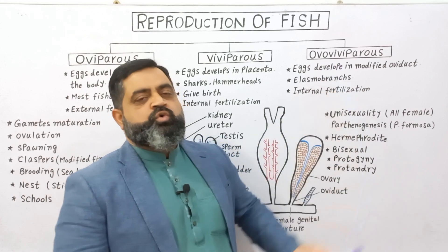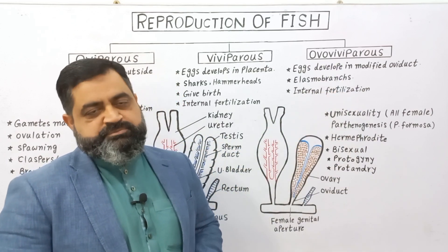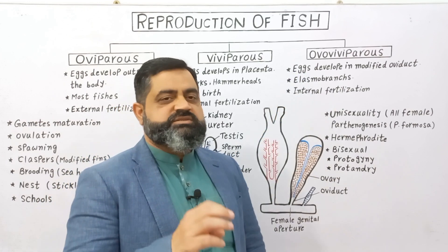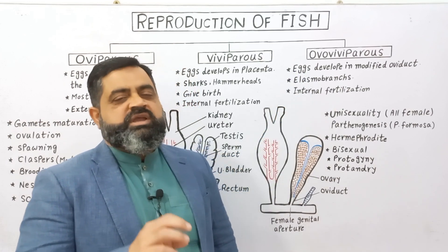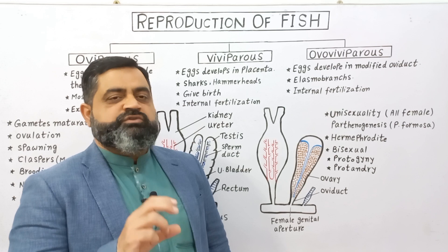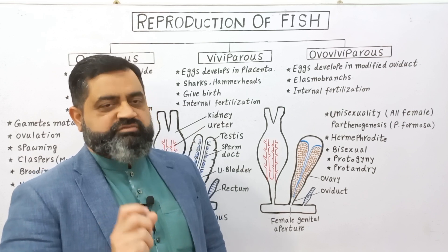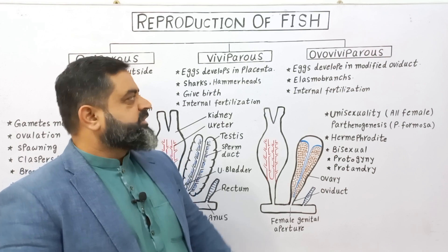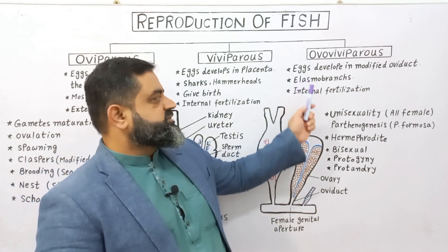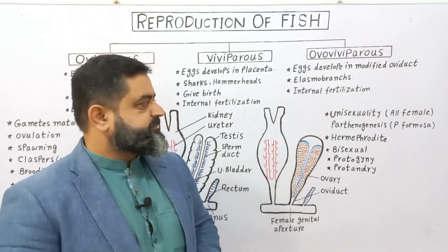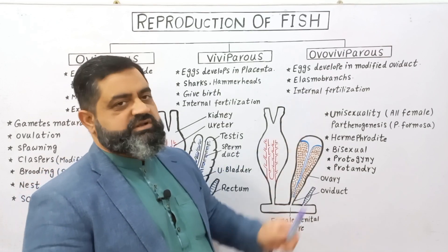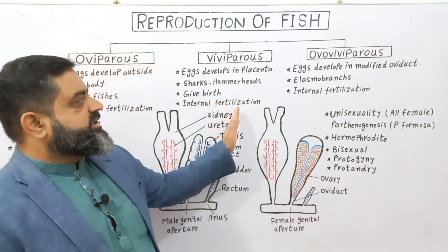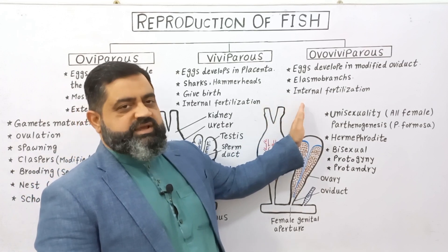The third category is known as ovoviviparity, or ovoviviparous fish. These fishes produce eggs and the eggs develop inside the body of the fish in a specialized region of the oviduct, which is slightly modified. Fertilization usually takes place internally. Examples of these species are elasmobranchs.